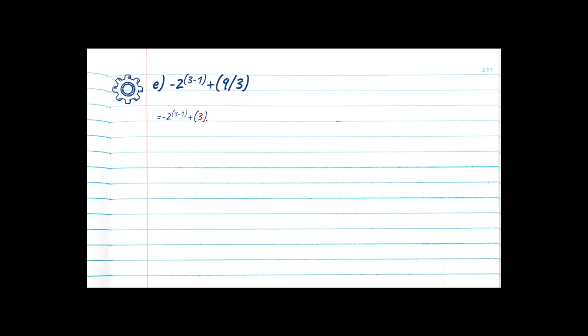Now we step back to the parent and check for more brackets — nothing to the left or right, so brackets are solved. We move to step 2: exponents. We go back to the minus 2 and see the bracket from the beginning. Now that we're on the exponent step, we can solve it. We look inside the bracket — no exponents, no division or multiplication, so we go to step 4: subtraction. 3 minus 1 is equal to 2. Now we expand the base: negative 2 times negative 2 — a negative times a negative gives us a positive, and 2 times 2 is 4.